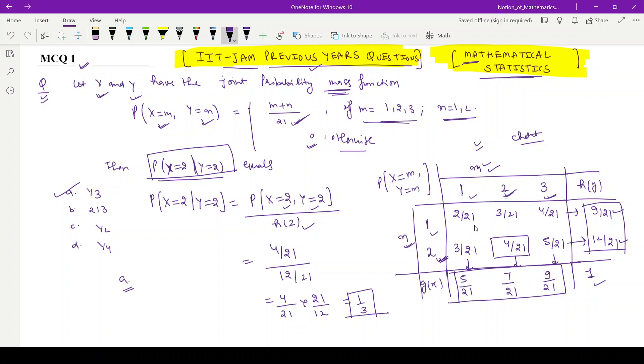How these values are written: when m is 1, n is 1, P(X=1, Y=1) = (1+1)/21. So 1+1 is 2 upon 21, 2+1 is 3 upon 21, 3+1 is 4 upon 21. Then 1+2 is 3 upon 21, 2+2 is 4 upon 21, 3+2 is 5 upon 21.